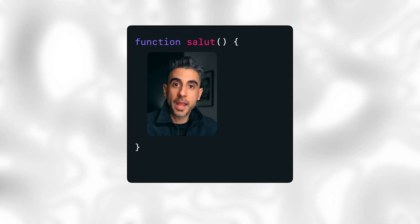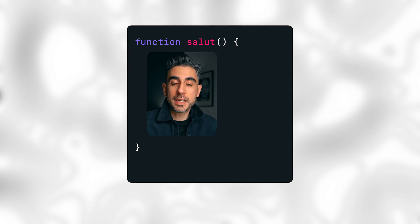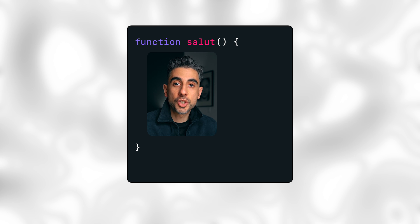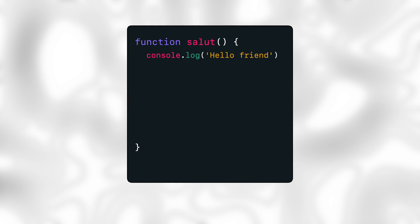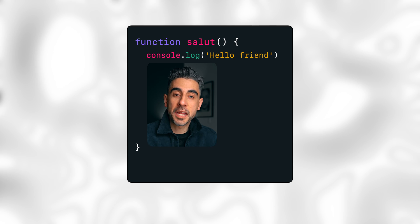Let's say this function was called salute, and what was inside of it is just a log, like console.log hello friend. So every time you call this function, I show up and I say, hello friend.